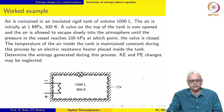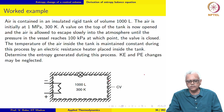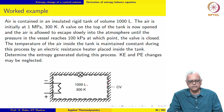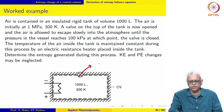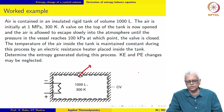Here we have a vessel: air is contained in an insulated rigid tank of volume 1000 liters, initially at 1 MPa and 300 Kelvin. A valve on the top of the tank is opened and air is allowed to escape slowly into the atmosphere until the pressure reaches 100 kPa, at which point the valve is closed.